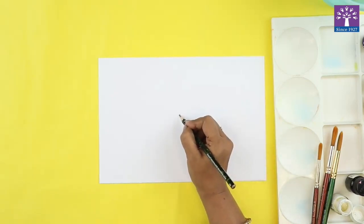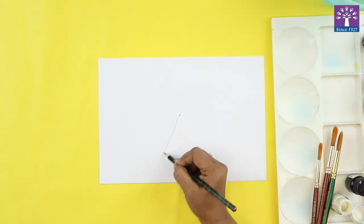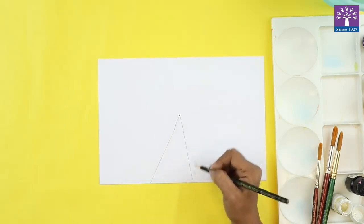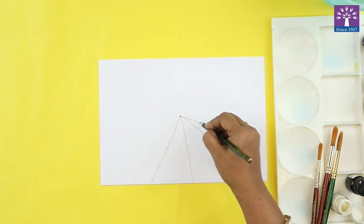Now draw diagonal lines from the dot going outwards. Just draw any number of random lines that are going outwards till the edge of your paper.